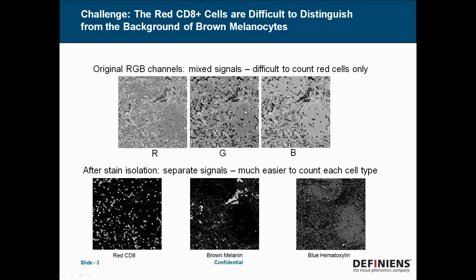What we would like to do is to isolate the stains for each cell type into a separate channel, and this is shown down at the bottom here. After stain isolation, we have the red CD8 positive cells in one channel, the brown background melanocytes in another channel, and the blue hematoxylin of the nuclei in a third channel. When you separate them into separate channels, it's much easier to count each cell type.